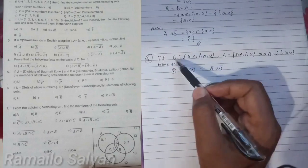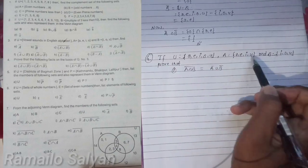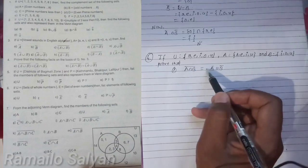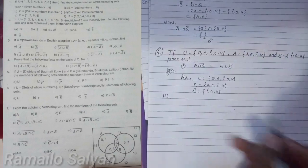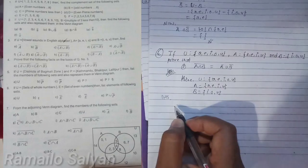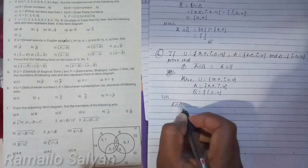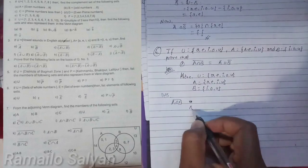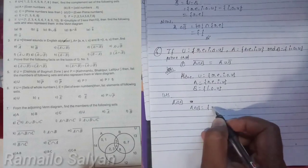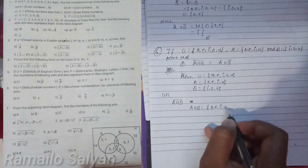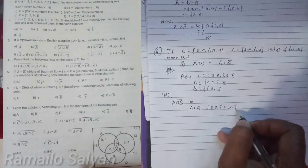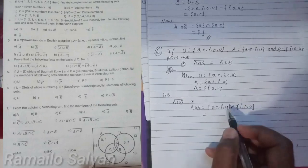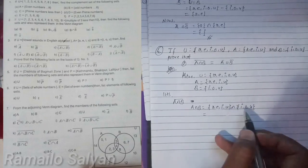Next question: If U = {A, E, I, O, U}, A = {A, E, I, U}, and B = {I, O, U}, prove that (A intersection B) complement equals A complement union B complement. For the LHS, find A intersection B. Members of A are {A, E, I, U} and members of B are {I, O, U}. The common members are {I, U}, so A intersection B = {I, U}.